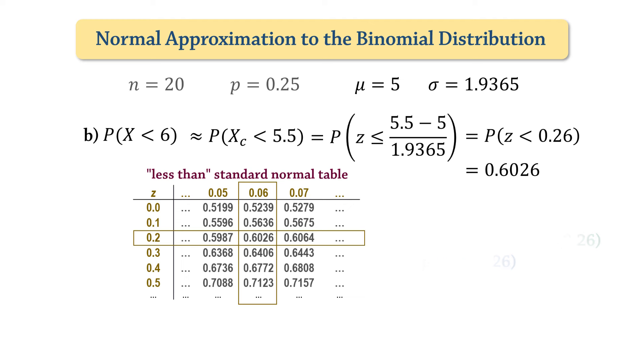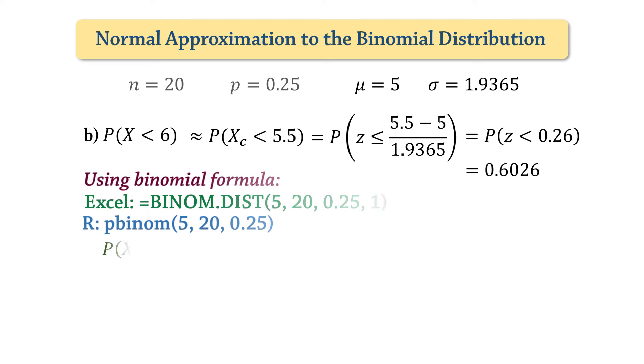Now, using the formula, the probability that x is less than 6 is 0.6127. Again, our approximation is quite close.